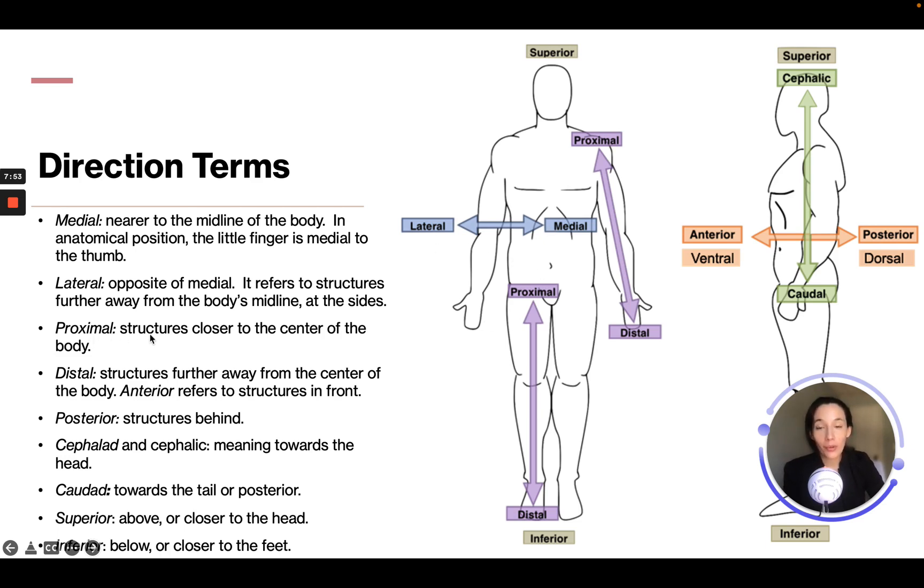So proximal. Proximal are structures closest to the center of the body. So if you have somebody standing up, the hip is going to be proximal versus the foot—it's closer to the center of the body. So distal are structures further away from the center of the body. So again, proximal is towards, but the foot would be distal compared to the hip.